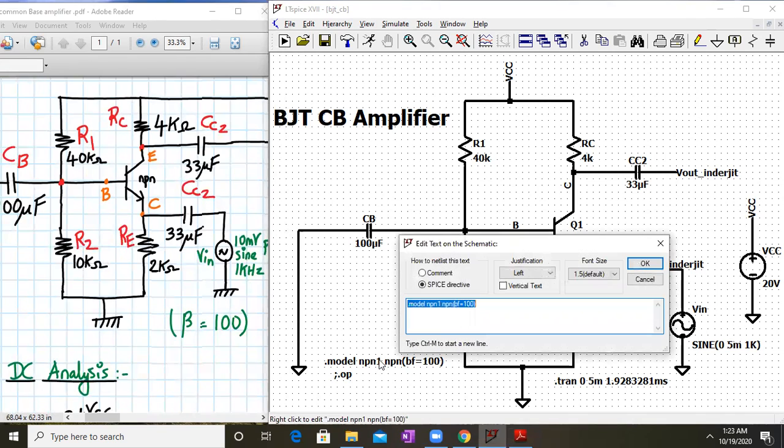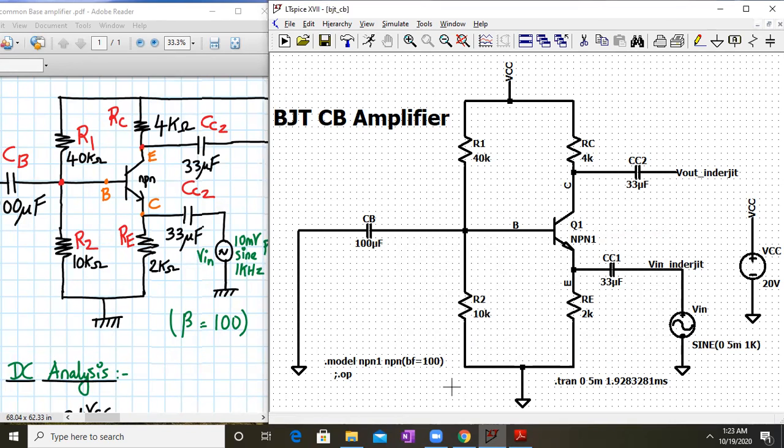And the model parameter, that is beta, how to define it. So as soon as you select this NPN transistor, right click on it. You have to make it as NPN1. Now, in the spice directive, you have to type the following code: dot model NPN1, NPN BF, BF stands for beta equal to 100. So this means that the transistor which we have used have taken the value of beta as 100.